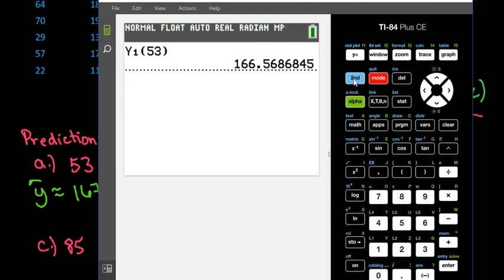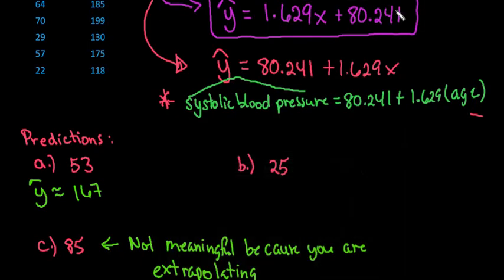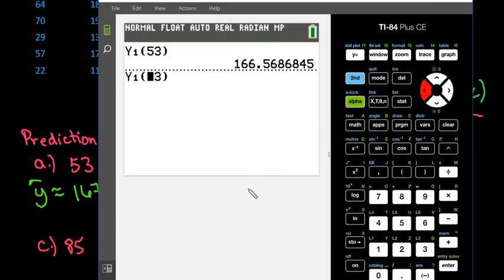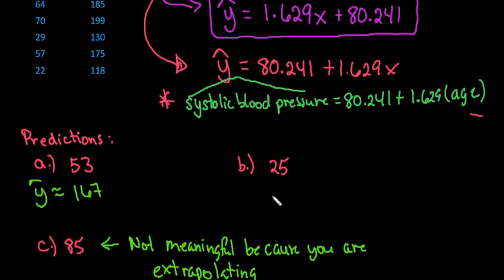Another way that you could do it, and if you wanted to do another one, I could do second entry and I could change the value of whatever I wanted this to be. This is probably the more complicated way of doing it, but it is a way of doing it. So the other predicted value is 25. And we can see that we would predict it to be about 121. So our predicted systolic blood pressure at 25 is approximately 121.